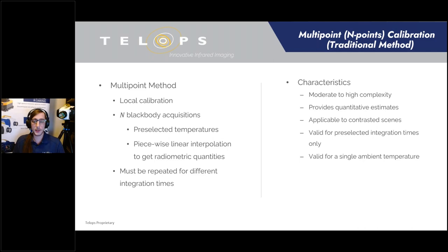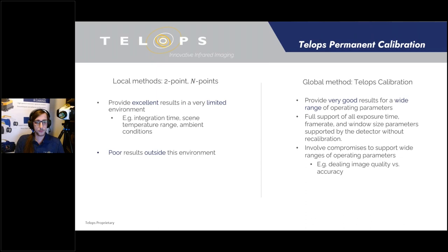Multi-point techniques can be classified as local calibration methods, which generally yield good accuracy when remaining under the specific conditions under which the calibration measurements were collected. Local calibration suffers from reduced accuracy any time the user wants to use a different set of parameters. For example, if a multipoint calibration is created using a 25 microsecond exposure time, the user would need to expect degraded accuracy if they increased the exposure time to 100 microseconds. Similarly, you would expect degraded accuracy if you collected a multipoint calibration indoors and then moved to an outdoor location to perform measurements.